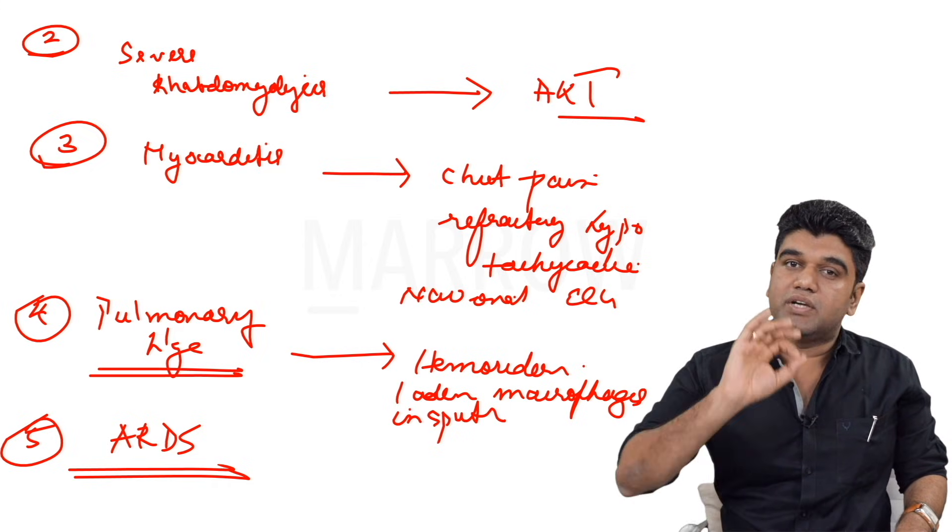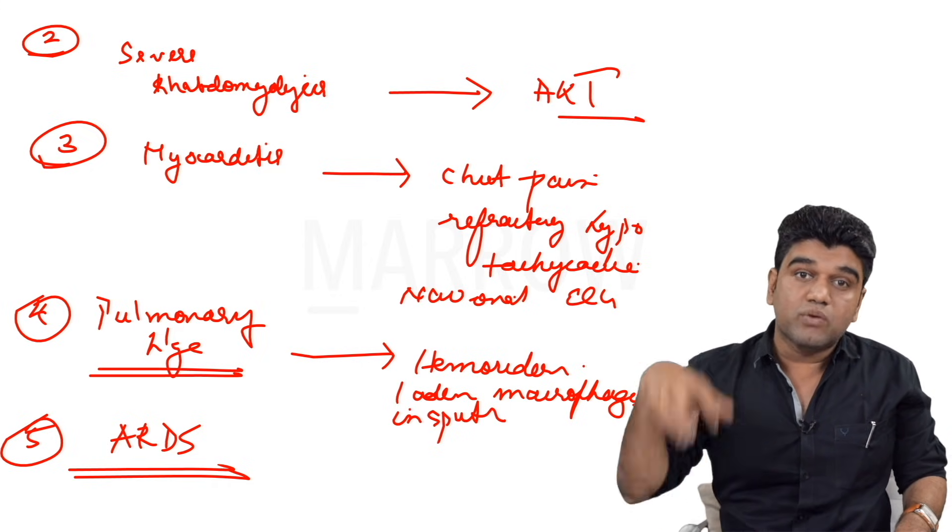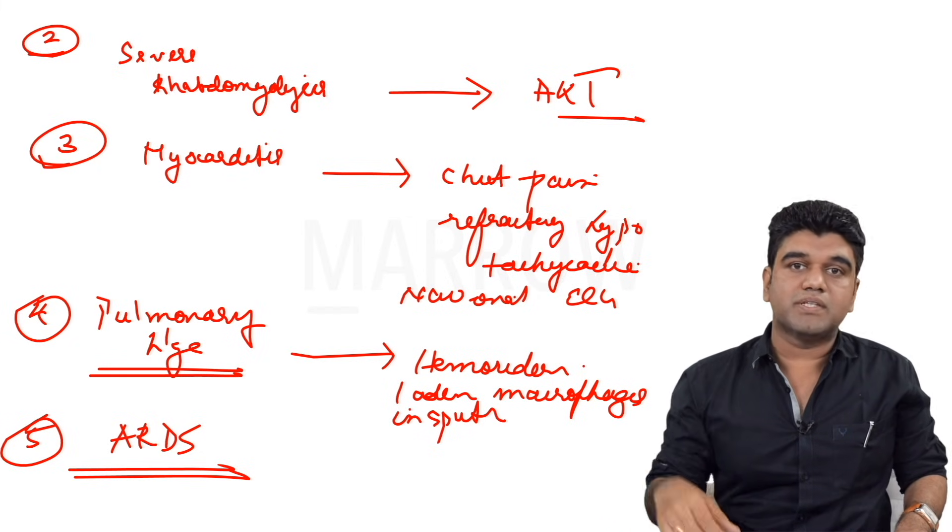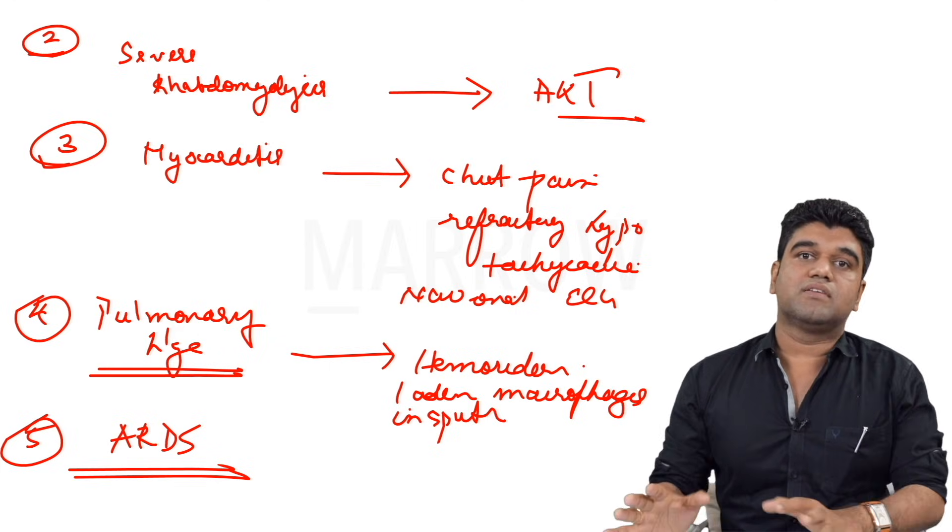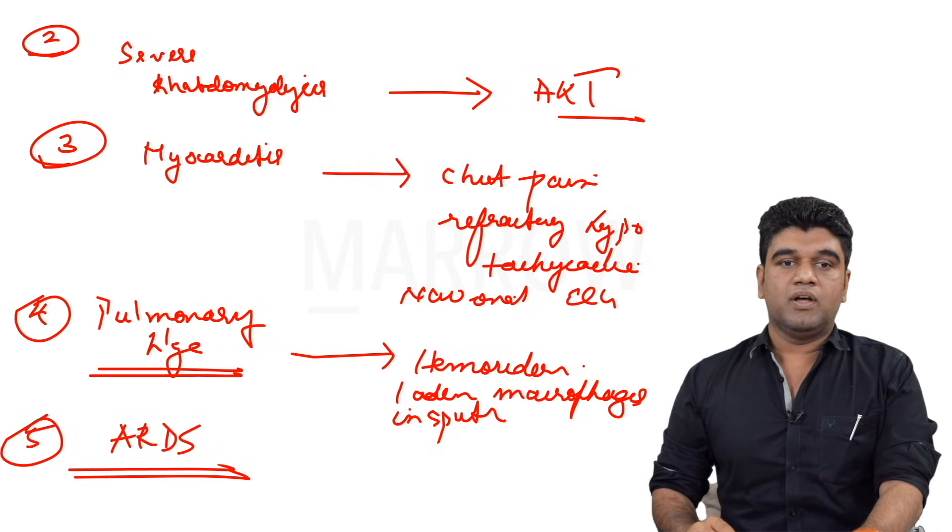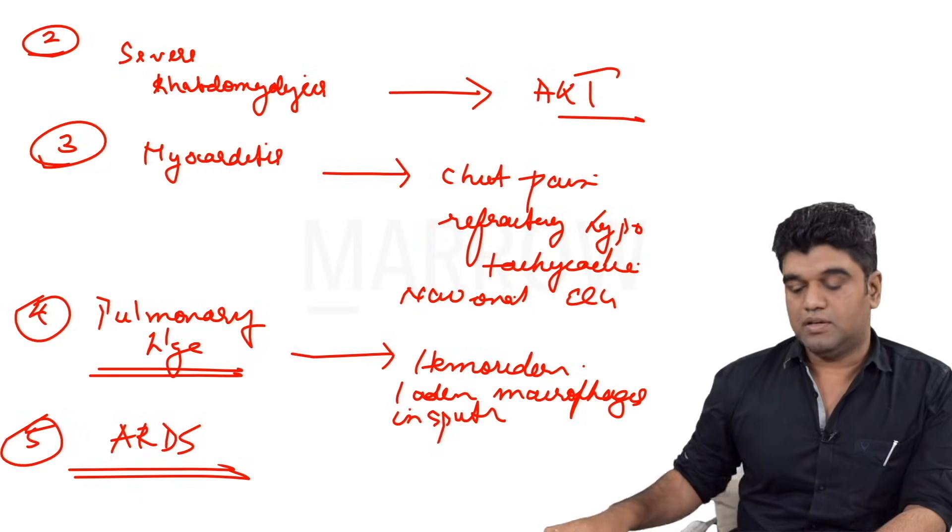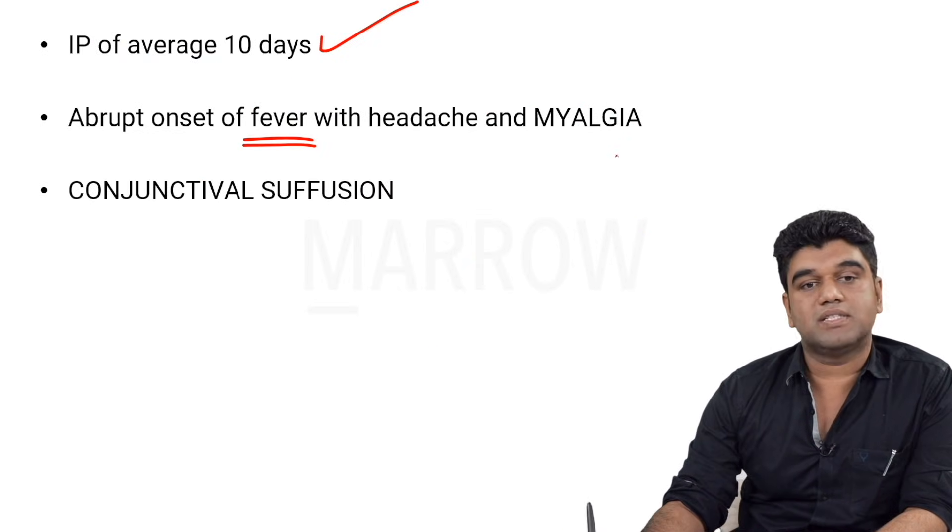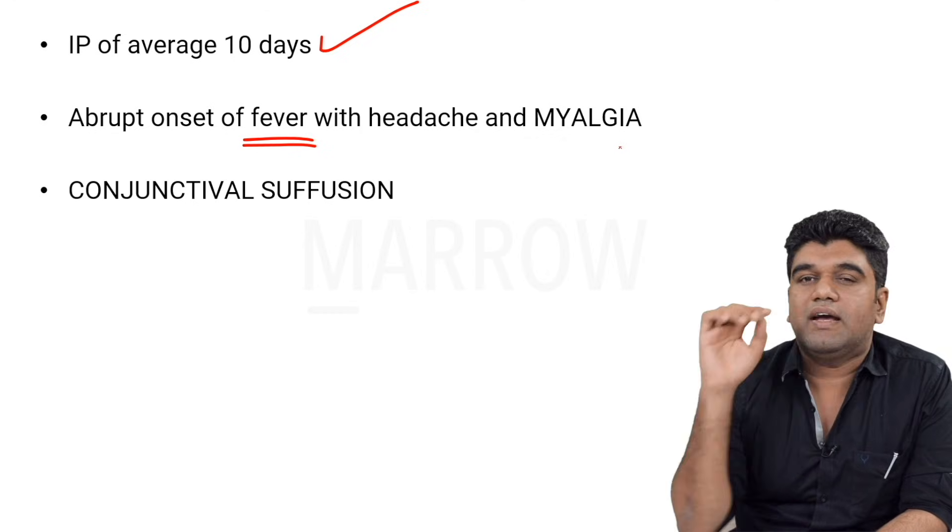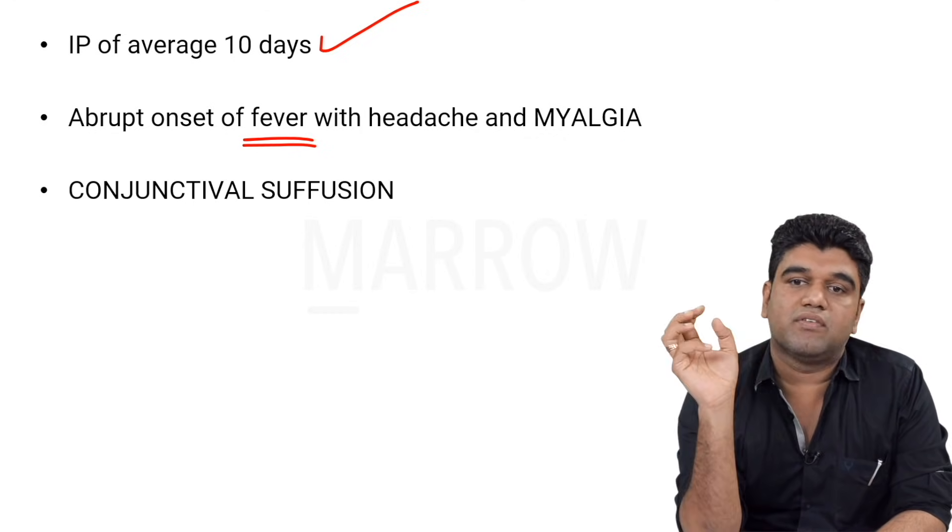It's very important to figure out lepto and start treating in the first week itself because then we can reduce the chances. Although I said it has immunological basis, it has been proven that effective treatment of the organism in the first week has reduced the risk of complications. Conjunctival suffusion is something you have to always keep in mind. IP average 10 days, abrupt onset of fever with headache and myalgia, conjunctival suffusion. Headache more is always in favor of dengue. Myalgia more is always in favor of lepto.